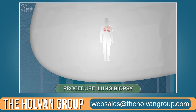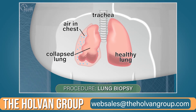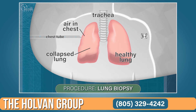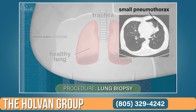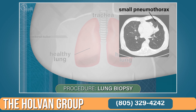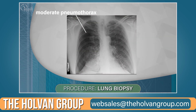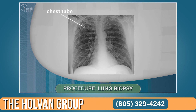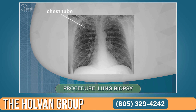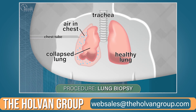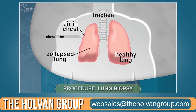If air leaks out of the lung, it collects between the lung and chest wall — this is called a pneumothorax. If the pneumothorax is small, it will be watched over time with chest X-rays. If you're having trouble breathing or it's large, you'll have a tube placed into your chest for a couple of days while the small hole in your lung heals. The tube allows the air on the outside of the lung to escape so the lung can expand to fill up the chest.